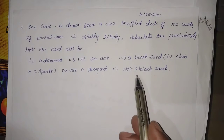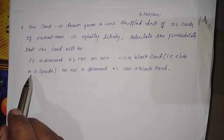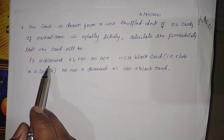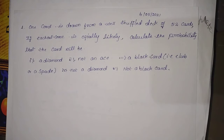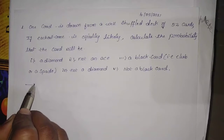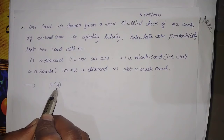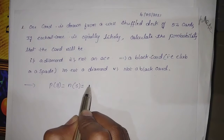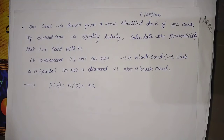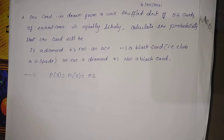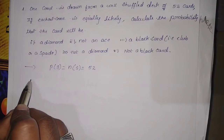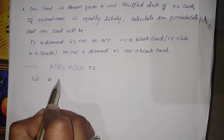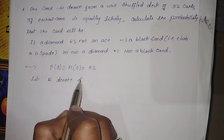Before finding the diamond card probability, we first establish the sample space. The total number of cards gives us n(S) = 52, because a pack contains 52 playing cards. Let capital A denote a diamond card.